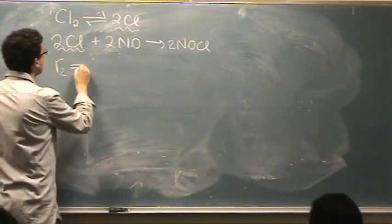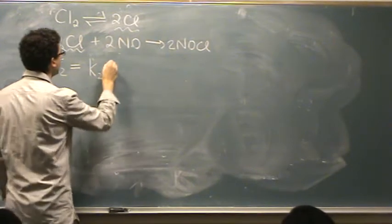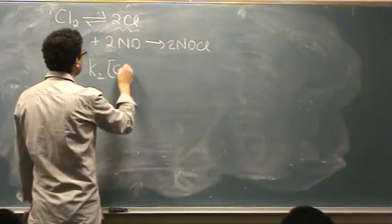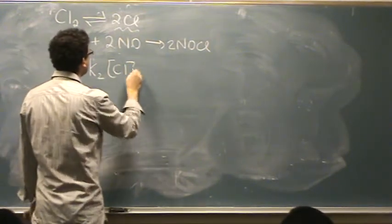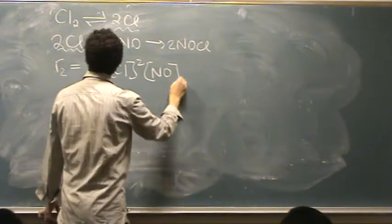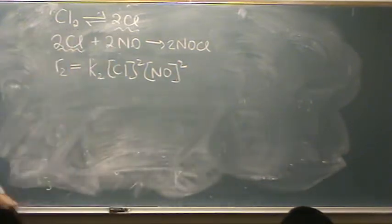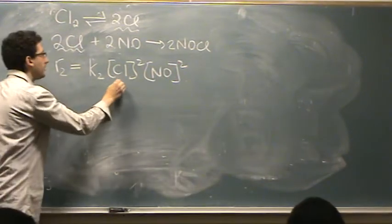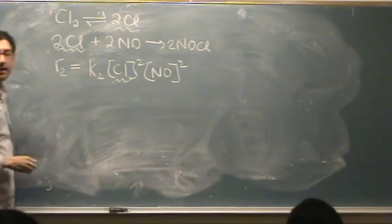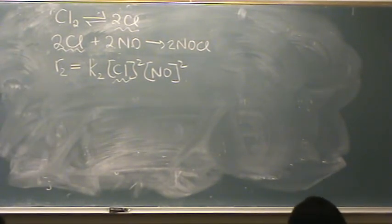Rate 2 equals K2 times [Cl]² times [NO]², which could be fine. However, I have Cl here as an intermediate, so I need an expression for Cl to substitute in.